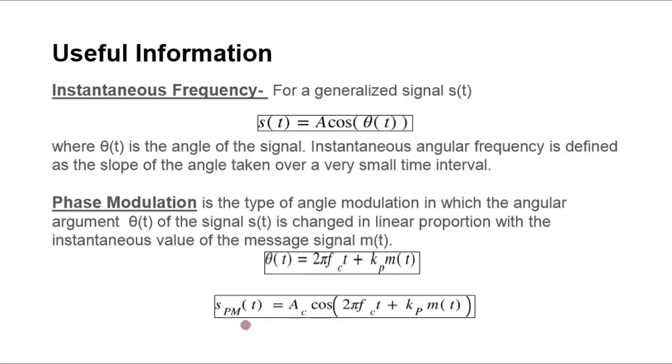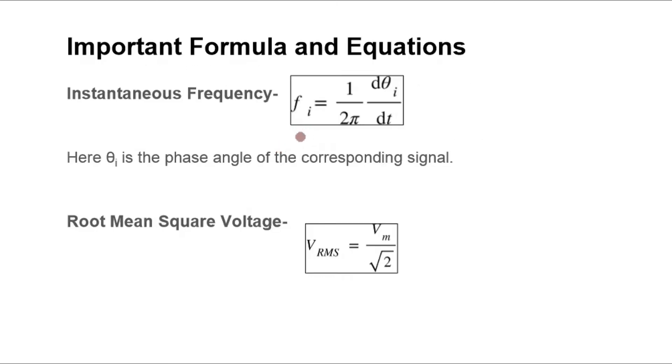An example of the phase modulated signal is given as s_PM(t) equals Ac cosine of 2π fc t plus kp times m(t). Mathematically, the instantaneous frequency of a signal is 1 over 2π times the first derivative of the phase angle. Also, root mean square voltage for a sinusoidal signal is its peak voltage divided by root 2.